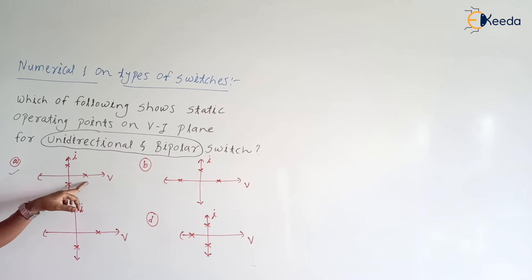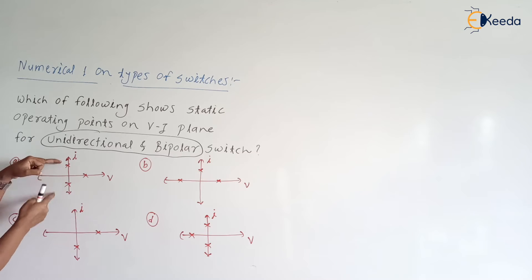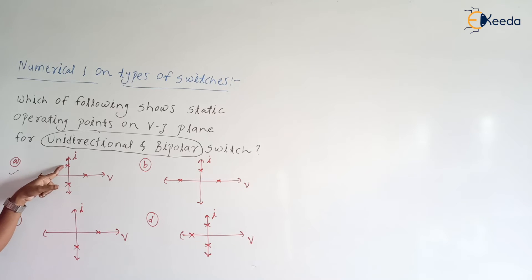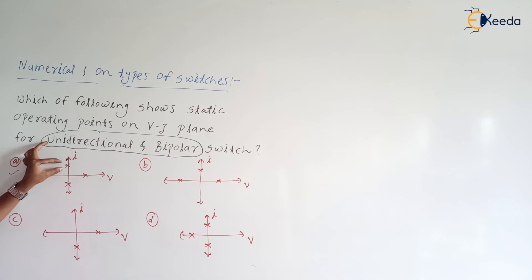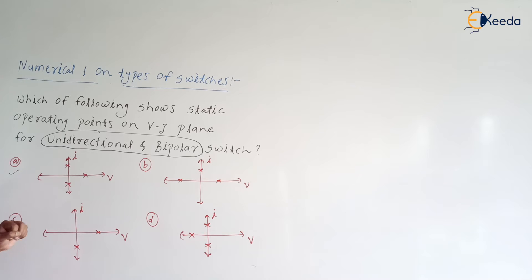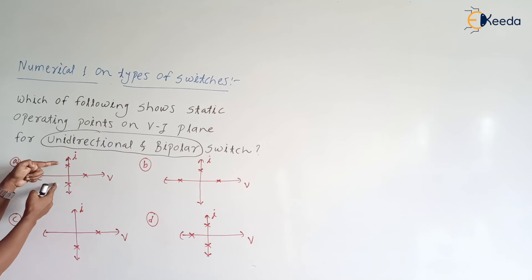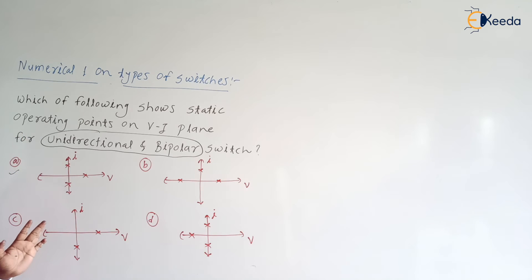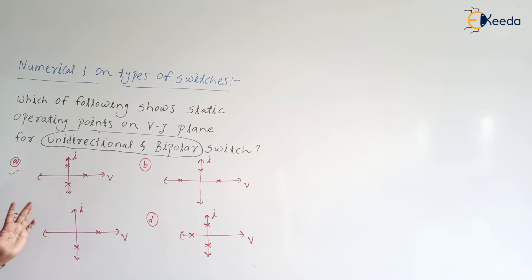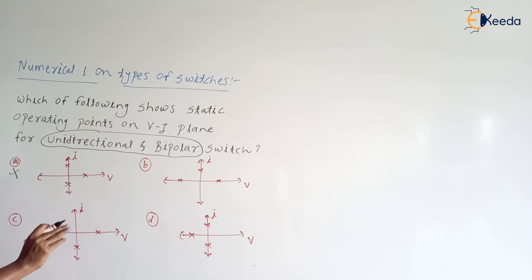This characteristic is unipolar. Corresponding to the other two points, the voltage is zero, meaning the switch is in the on state, and the switch is allowing positive current as well as negative current. So the type of the switch is unipolar and bidirectional. But they have asked for unidirectional and bipolar, so option A is not the correct option.